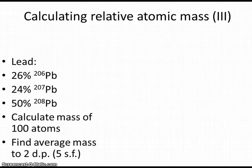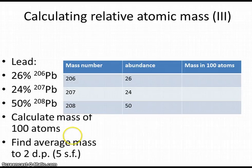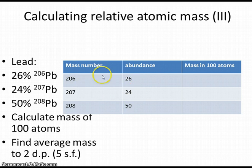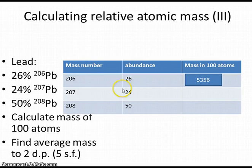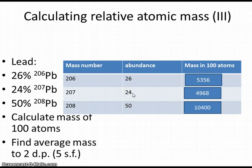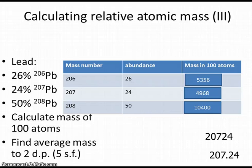One tip: you may want to lay out your calculation in the form of a table. Here are the mass numbers and abundances. We multiply those two numbers together to fill in the third column. For lead-206: 206 × 26 = 5356. Lead-207 × 24 = 4968. Lead-208 × 50 = 10400. Adding them all together gives 20724. Dividing by 100 gives, to two decimal places, a relative atomic mass of 207.24.